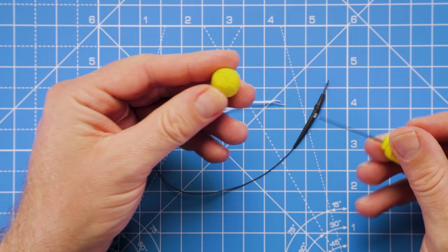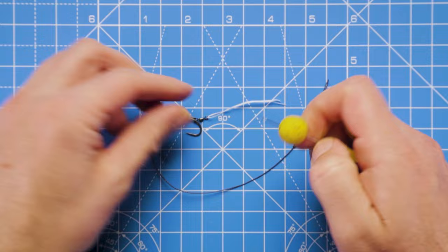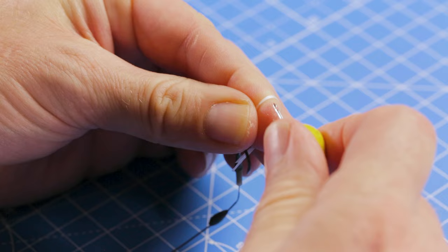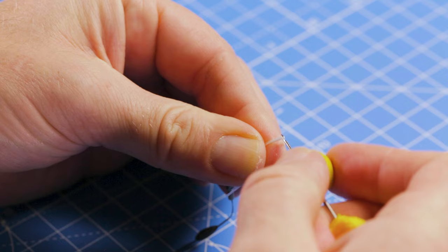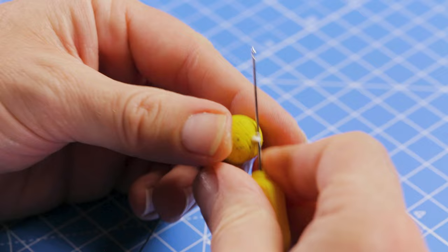Thread that onto the baiting needle, and then I just like to wrap that floss over my index finger so I can pinch it nicely with the baiting needle and thread on the wafter. There we go.